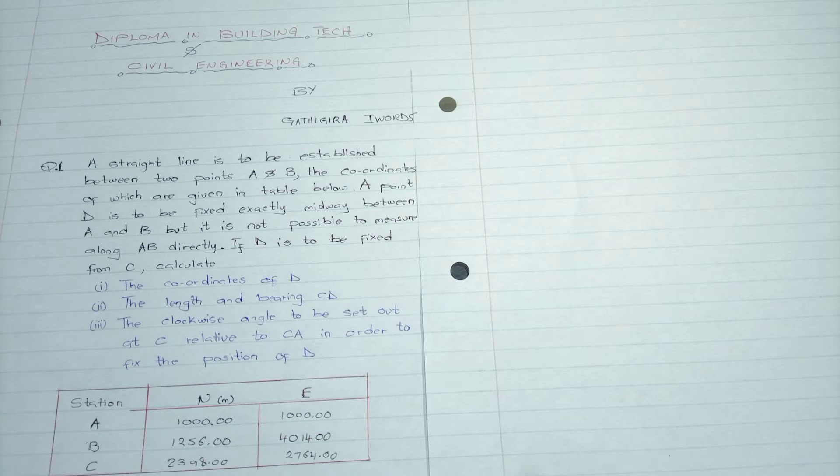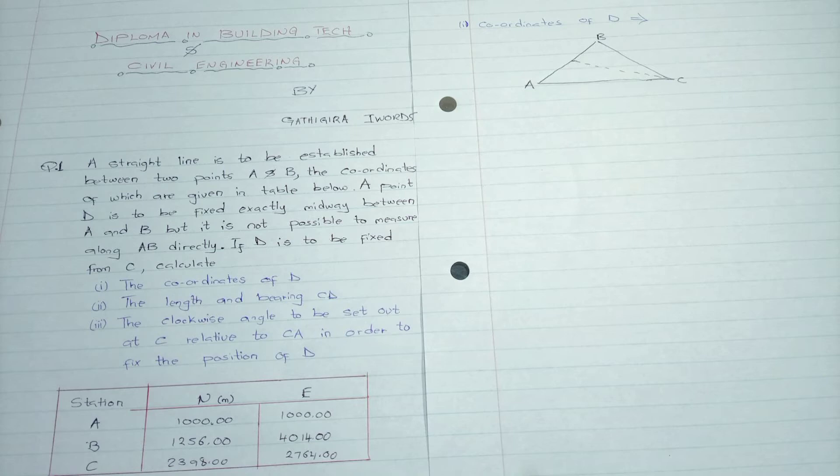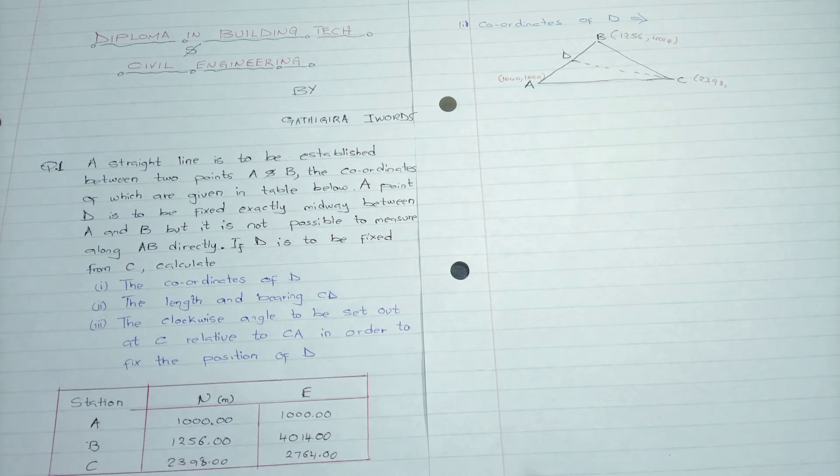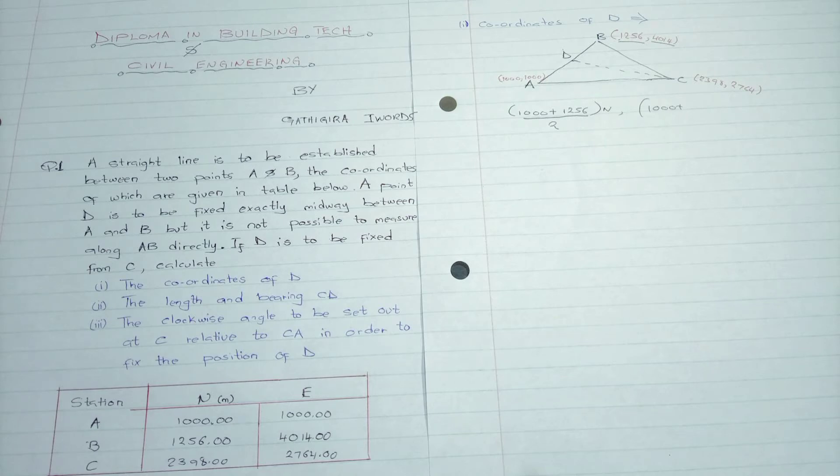So we calculate the coordinates of D. First we draw and find where the position of D is. According to our coordinates, we have A with both northing and easting at 1000, then B, then C. We find the average of the coordinates which are between A and B by finding the average of separate northing and separate easting. Having added the two and dividing by two, we find the coordinates for D.